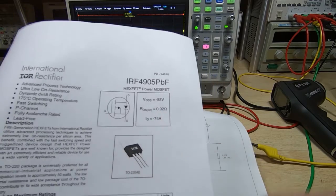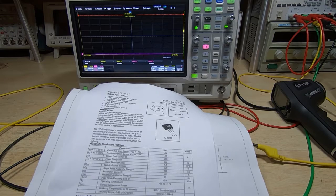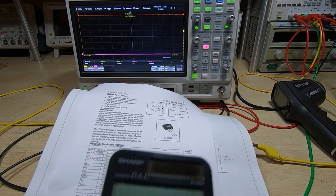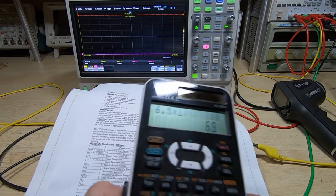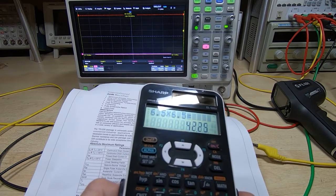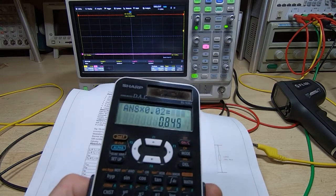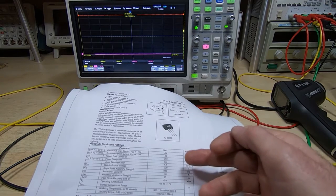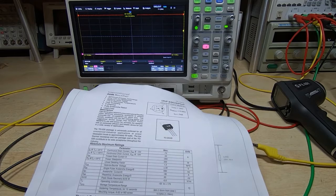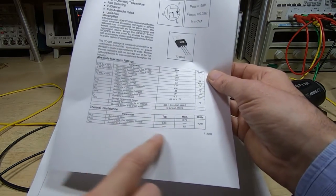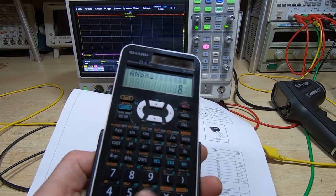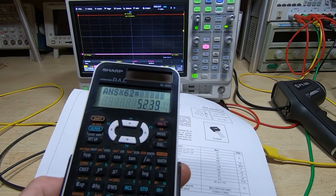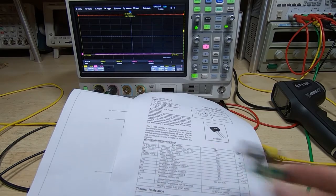The on resistance should be 0.02 ohms. If we work out how much power that should be dissipating using I squared R, the coil was drawing about six and a half amps. So 6.5 squared is 42.25, multiply that by the resistance, we should get about 0.845 watts. The spec sheet gives us the junction to ambient temperature rise per watt at 62 degrees. So if we plug that value in, the temperature rise should have been about 52 degrees centigrade without any heat sinking whatsoever.